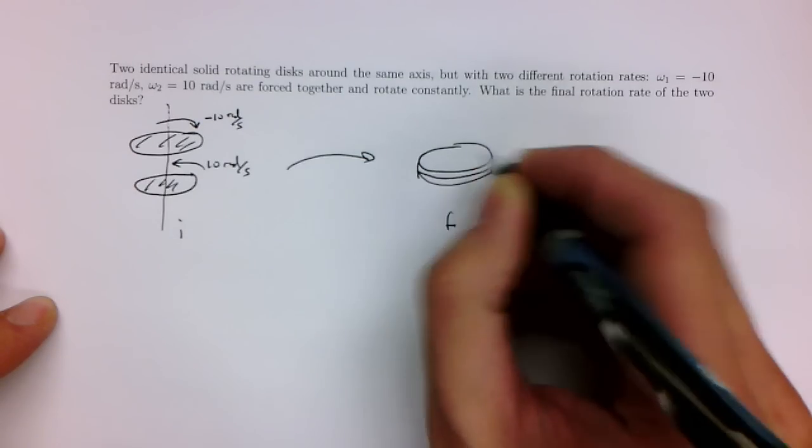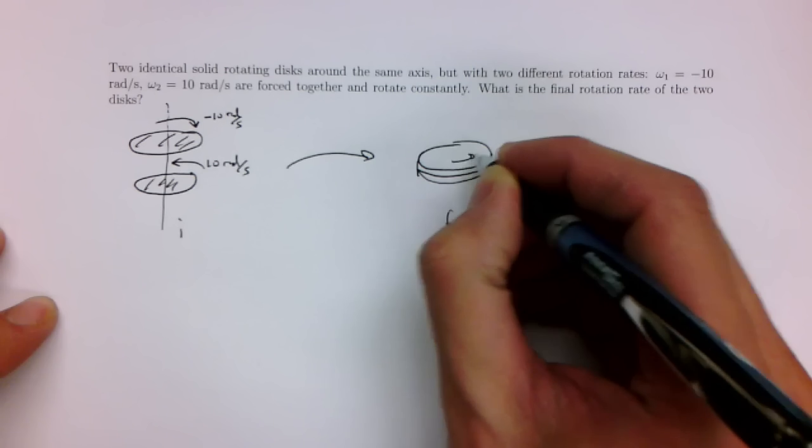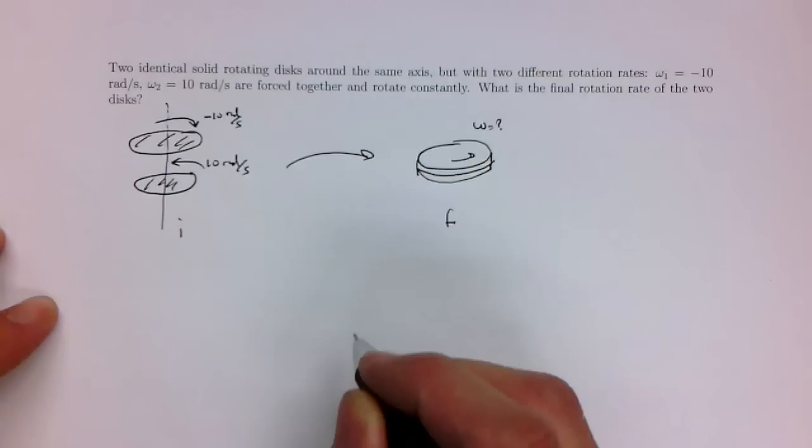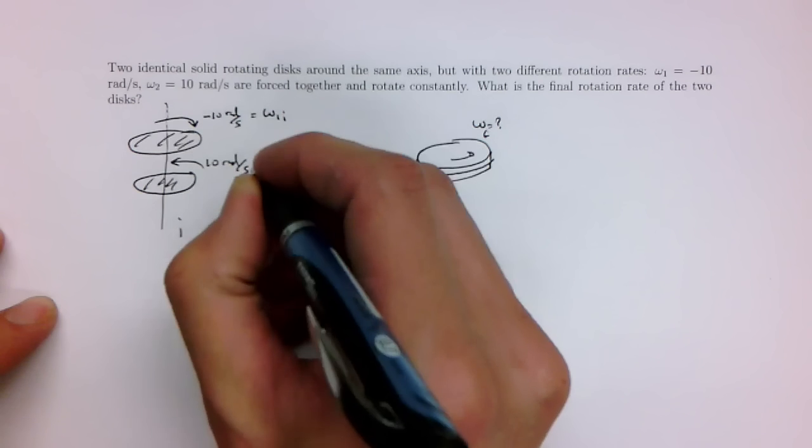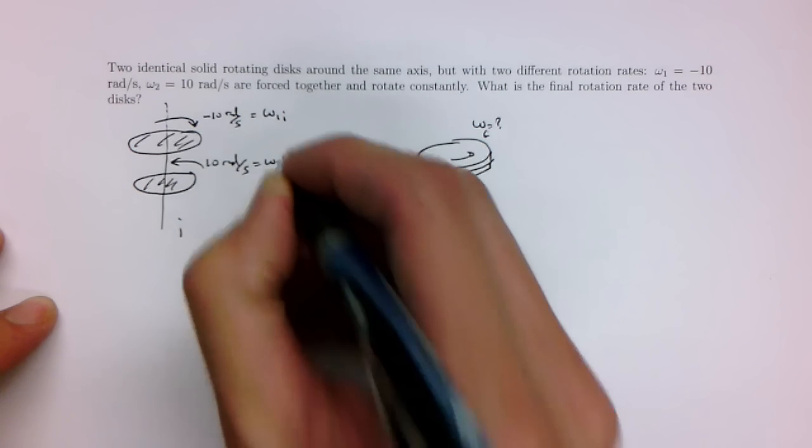And they rotate together with some omega equals question mark, okay? This is final omega. This is initial omega 1 initial, omega 2 initial.